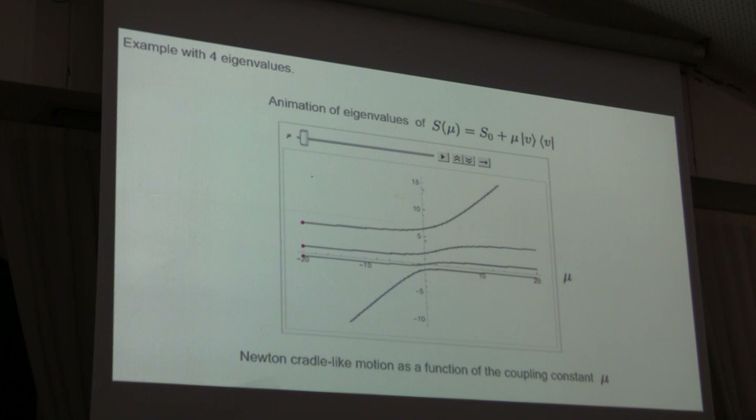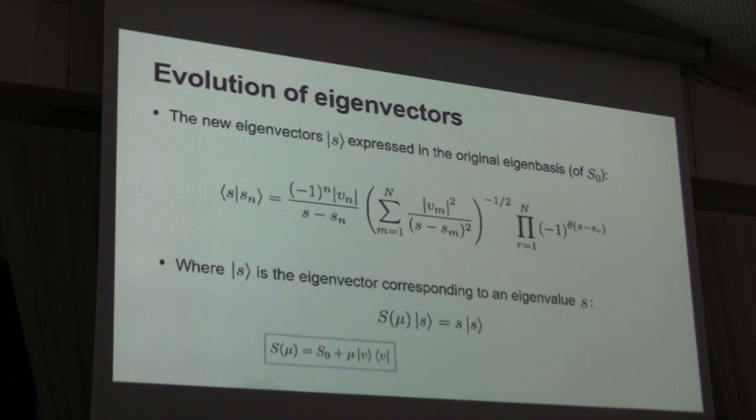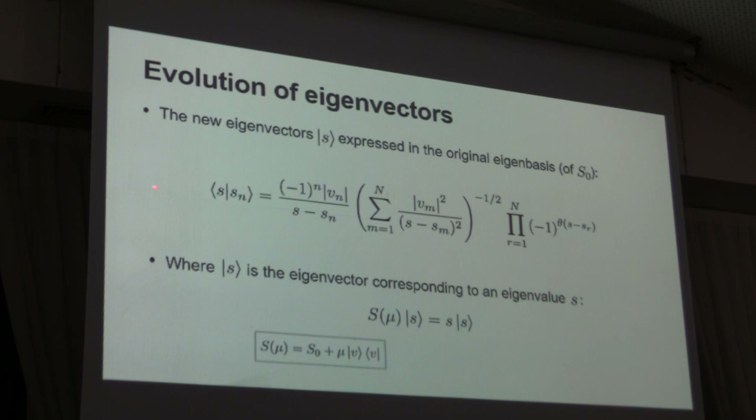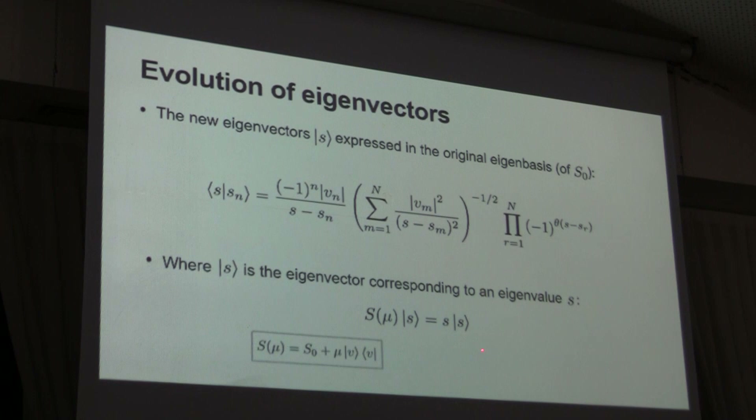Another interesting result is that we can express the new eigenvectors after we add the rank-one projector in terms of the old eigenvectors. This formula tells you that if S is some real number that is an eigenvalue of this operator, the corresponding eigenvector can be calculated exactly in terms of the old eigenvectors.